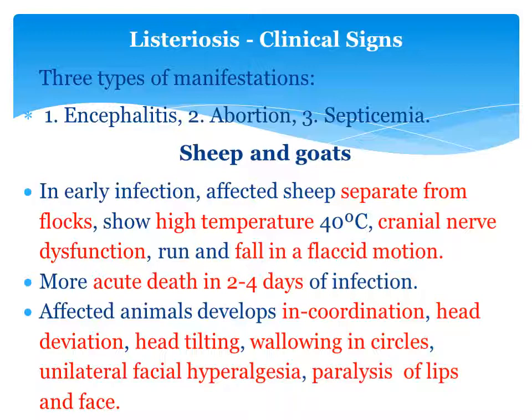In clinical signs, there are mainly three types of manifestations observed: one is the symptoms of encephalitis, abortion and related symptoms, and septicemia symptoms. The symptoms differ in various animals but are nearly the same, and these symptoms are centered over these three — encephalitis, abortion, and septicemia — in almost all animals.